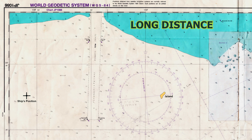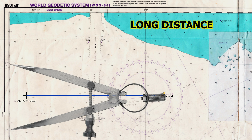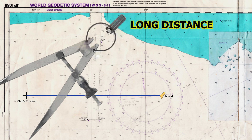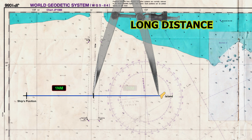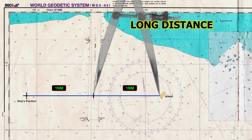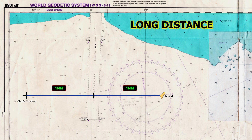For longer distances — more than one divider span — Step 1: Using a ruler, draw a straight line from the vessel to the island. Step 2: Measure a distance that your dividers can handle on the latitude scale. Step 3: Walk the dividers along the plotted line, counting each segment as you go. Step 4: Add up the segments to get the total distance. In this example, the distance from the vessel to the island is two nautical miles.